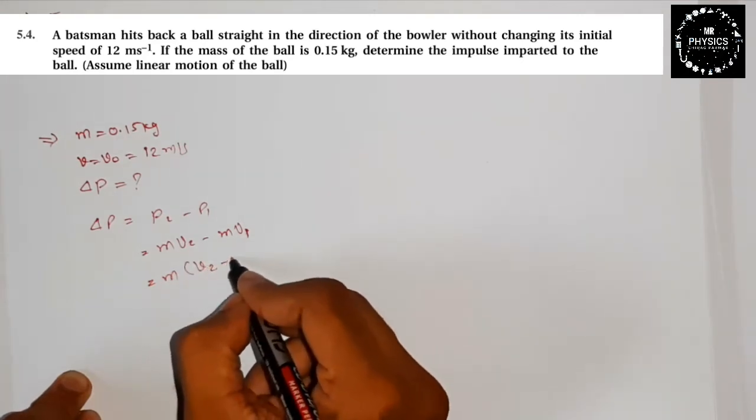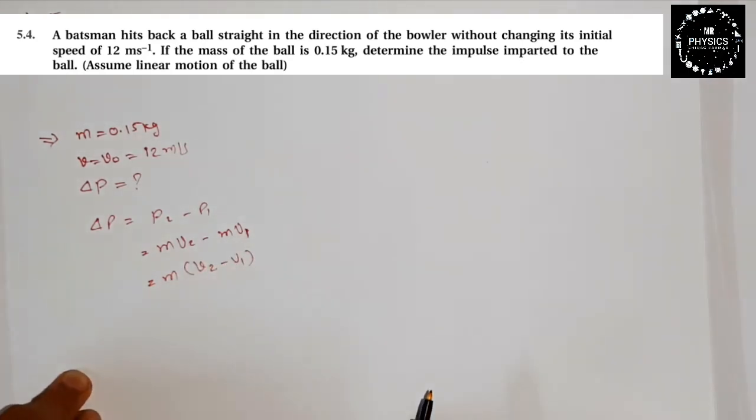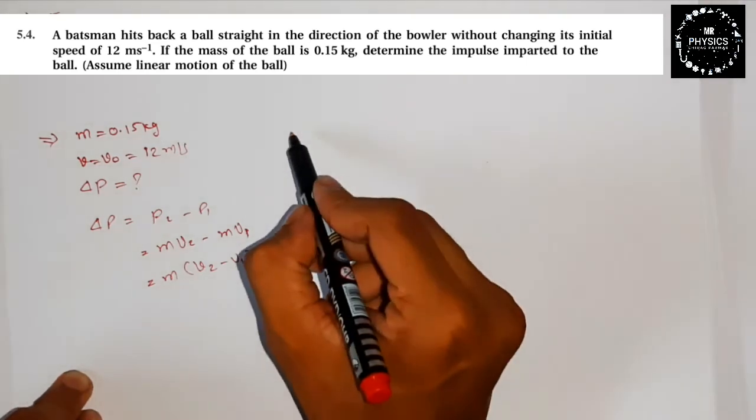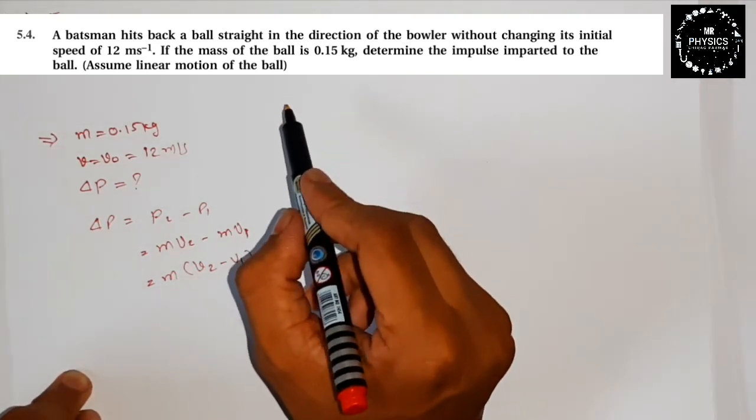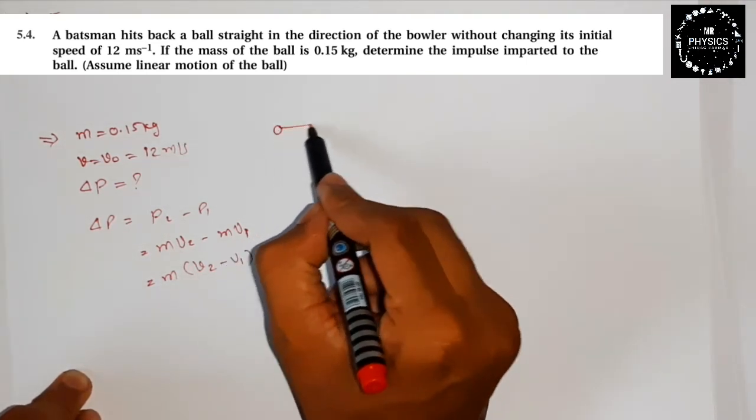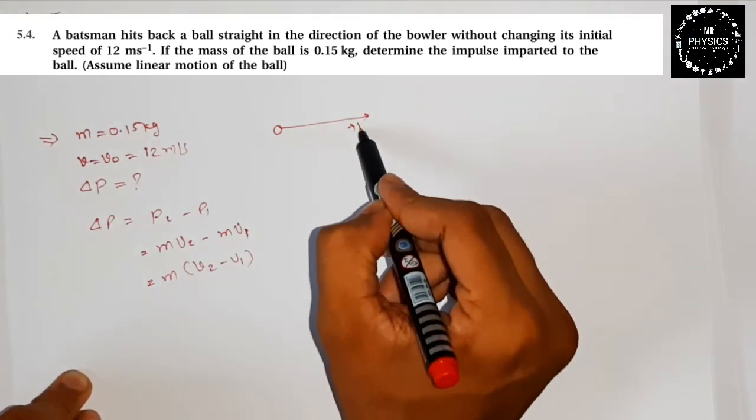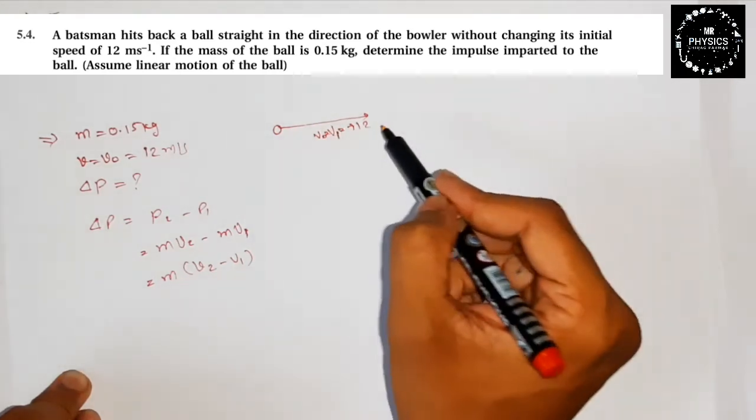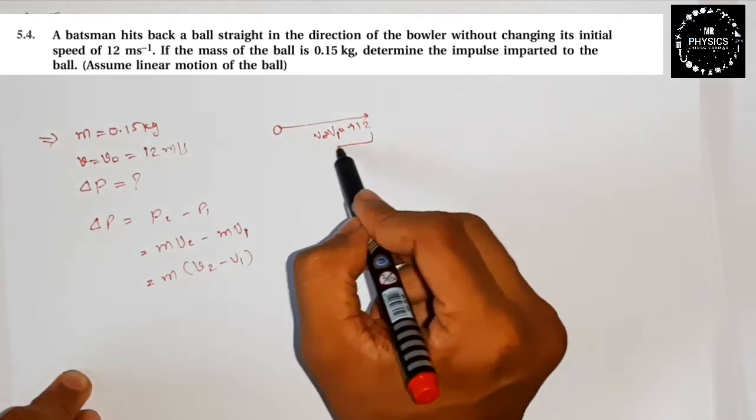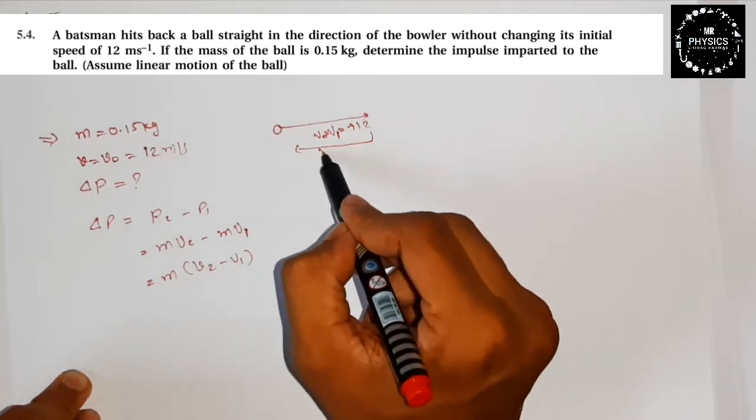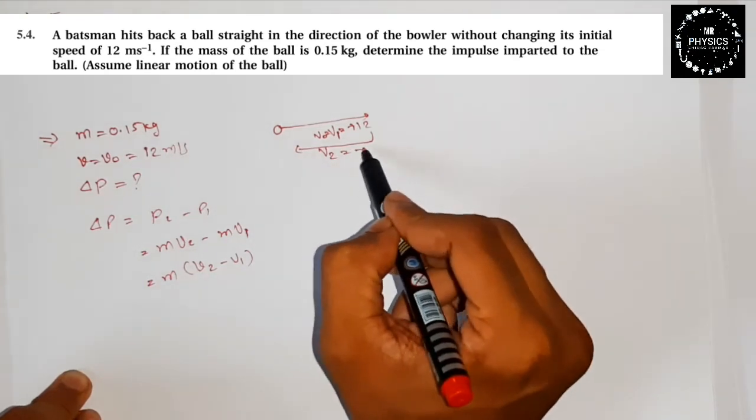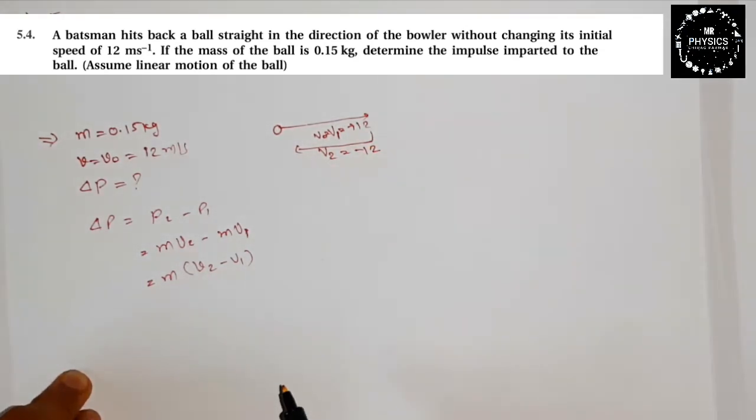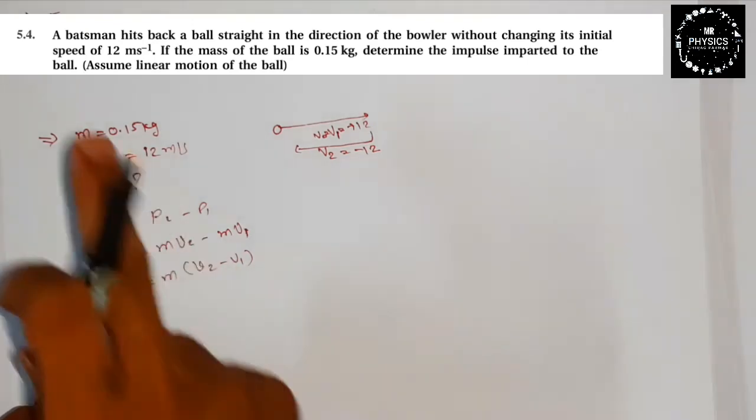So we have m times (v2 minus v1). Now we need to understand the ball's direction. Initially, the ball is going in this direction, which is positive 12, which is v0 and v1. Now the batsman returns the ball in the same direction, meaning v2's direction changes, so we should write minus 12. If it comes in this direction it's positive, if reversed it's negative.